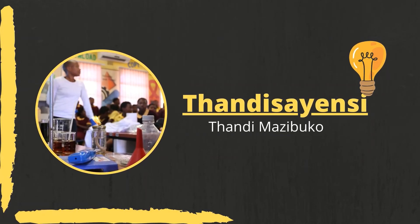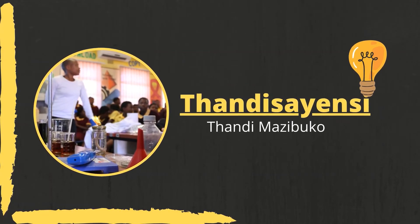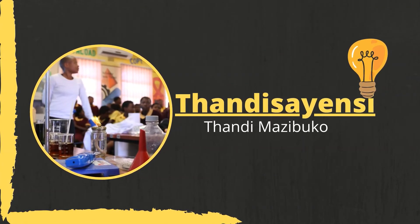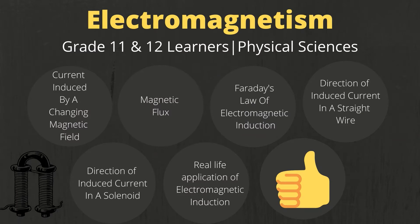Hi everyone, my name is Tandy. Welcome to my YouTube channel. This is Part 2 of Electromagnetism. In Part 1, we discussed how a current-carrying conductor creates a magnetic field, and we also spoke about how to determine the direction of the current and the magnetic field using the right-hand rule for both a straight wire and a solenoid. I would suggest that you first watch that video — I will leave the link to Part 1 in the video description.